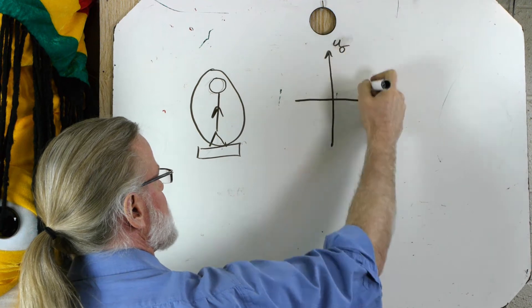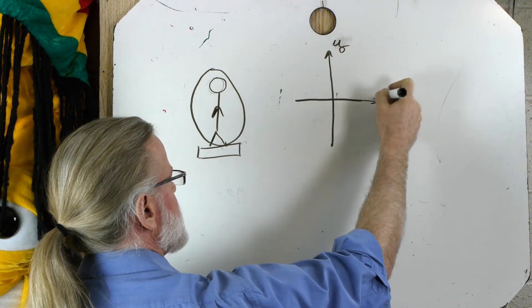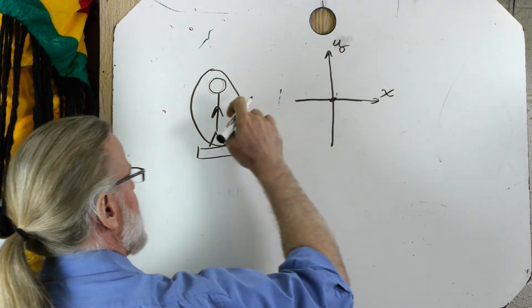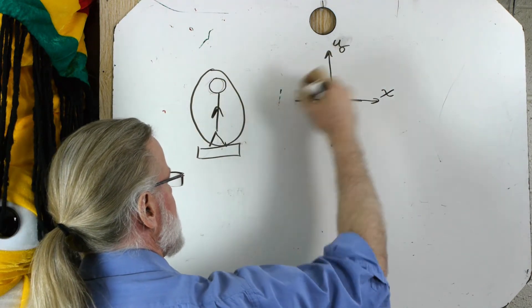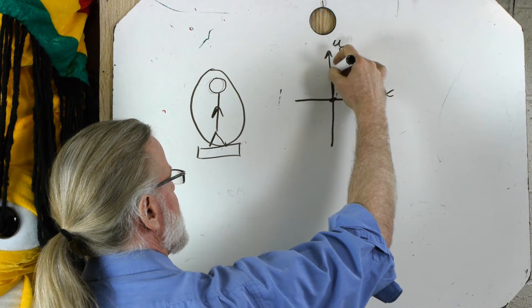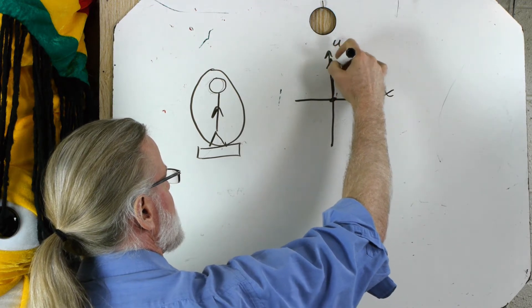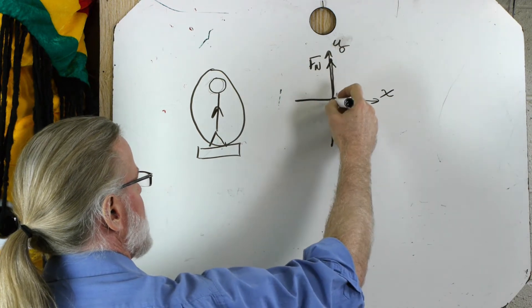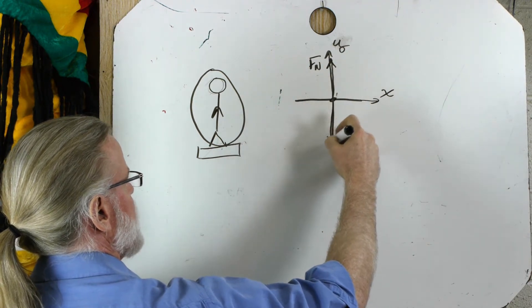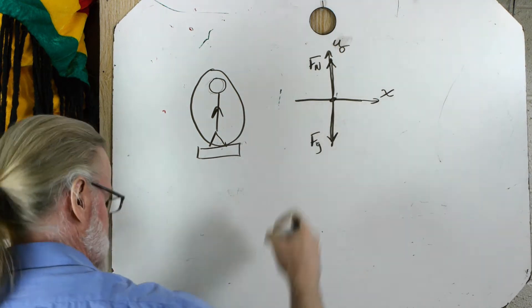Nothing's really happening in the x-direction, which is this way. Nothing's touching, nothing, nothing until we get to the bottom of the elevator. Or the scale actually, we have the normal force pushing up and we have the force of gravity downward.